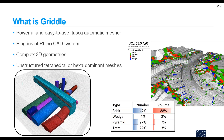For example, in this tunnel model you can see that the bricks in white represent the main part of the volume, and then you have a smaller percentage of pyramids, tetrahedra, and wedges, which are less adapted for modeling plasticity.